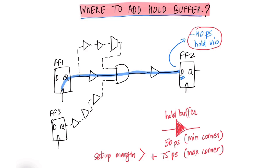So based on this information, let's try to understand where we can add this buffer. In this diagram, we see that we have a total of three timing paths which end in the FF2 D pin. So the first is our original path with the hold violation from FF1 to FF2.